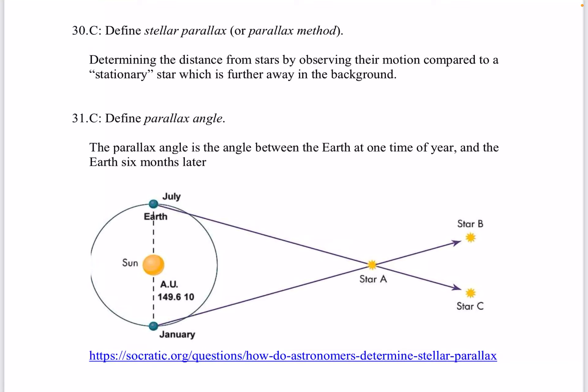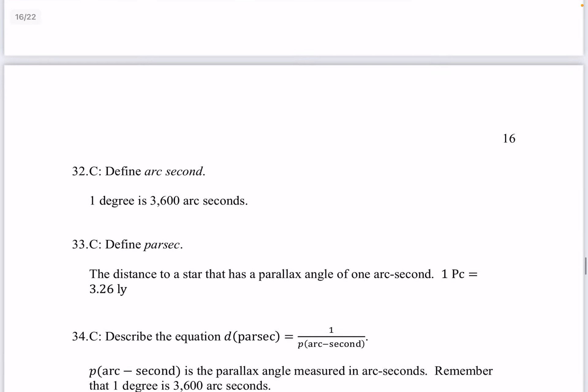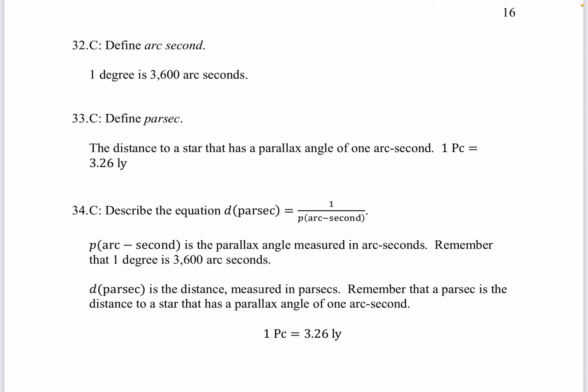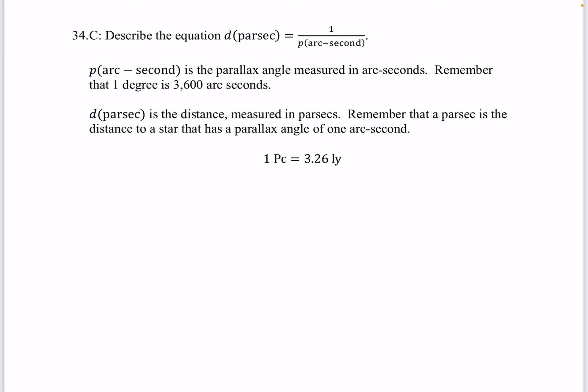Question 31. Define parallax angle. The parallax angle is the angle between the Earth at one time of year and the Earth six months later. Question 32. Define arc second. One degree is 3,600 arc seconds. Question 33. Define parsec. The distance to a star that has a parallax angle of one arc second. One parsec is 3.26 light years. Question 34. Describe the equation d in units of parsec equals 1 divided by p in units of arc second. So p is a parallax angle measured in arc seconds. And d is a distance measured in parsecs.